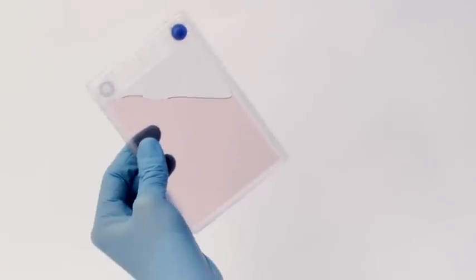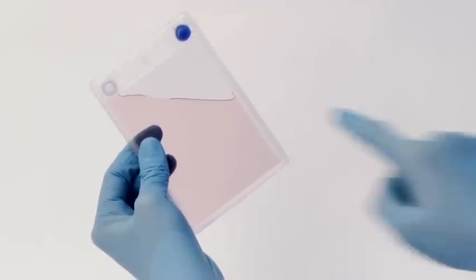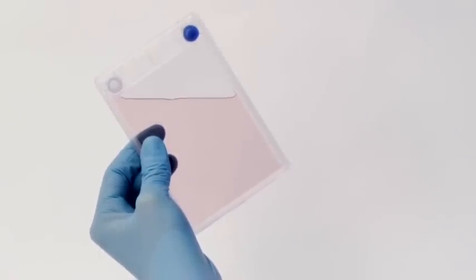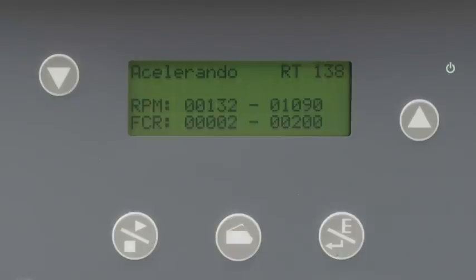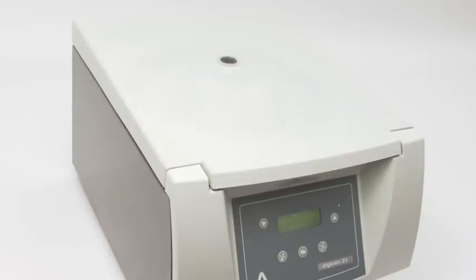To pellet the cells in the bottom right-hand corner, the pitaka should be positioned in the centrifuge with the port at the uppermost corner. Introduce the pitaka into the centrifuge rotor pocket in this way. Set the desired speed and time and begin centrifuging.